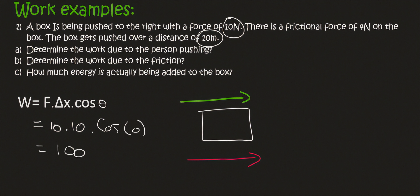So 10 times 10 is 100, and that's going to be joules. And you could say added to the box. You're not going to say to the right, because work is a scalar. So we can say 100 joules added.